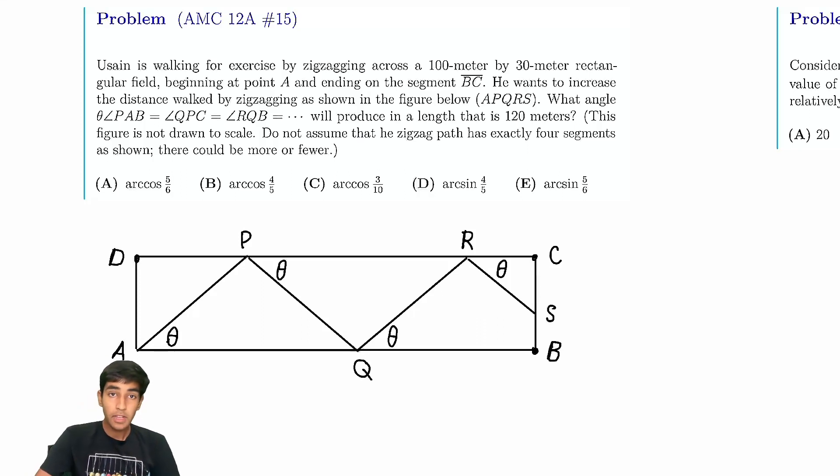So the idea here is we're just going to find the ratio of each of these segments to the width. Because the total width is 100, so if we can find the ratio of this segment to the width, we would find the ratio of the total length of the path to the total width.